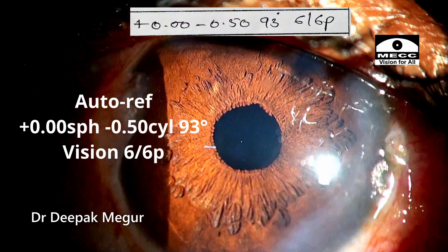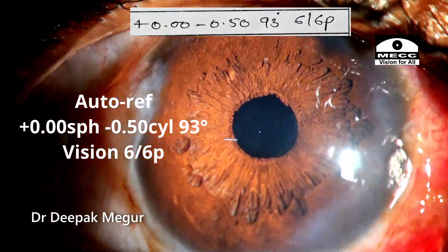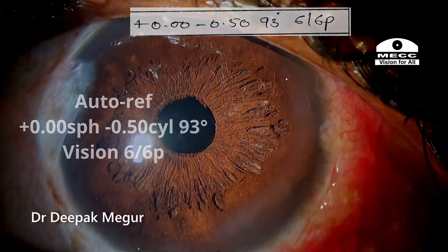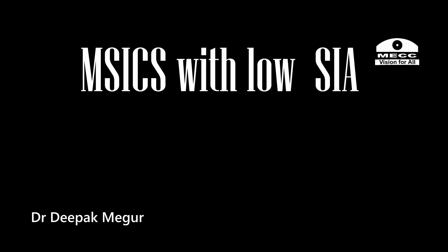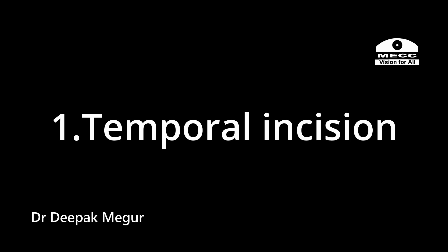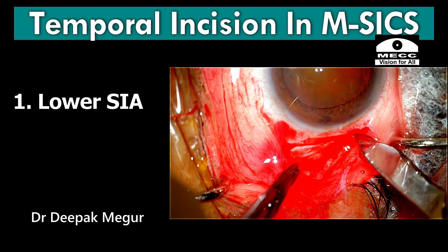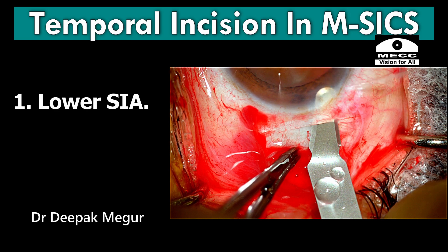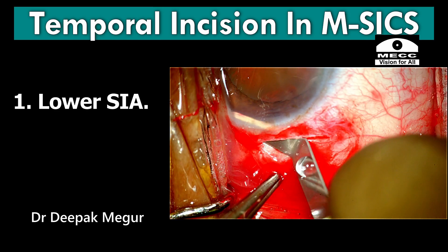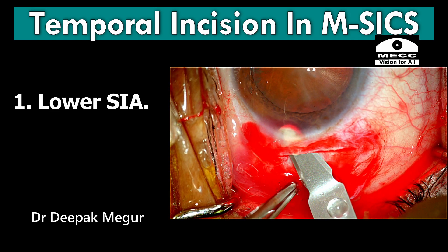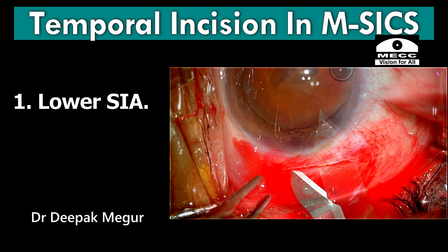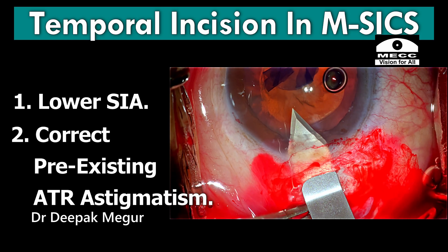This should be the refinement of the technique which we should aspire to, to make our results comparable to that of phacoemulsification. And this can be primarily achieved by practicing two important principles. Number 1: temporal incision. This will reduce the SIA significantly compared to superior incisions. Shifting temporally is probably the first thing one should try to do, and it has a significant advantage because the majority of our cataract patients have a pre-existing against-the-rule astigmatism.